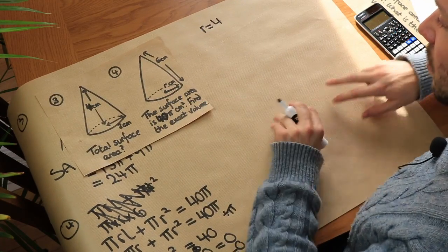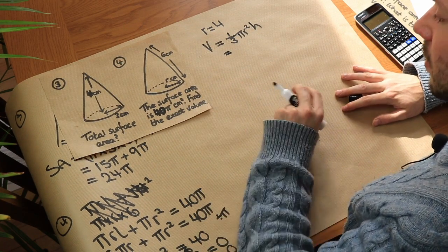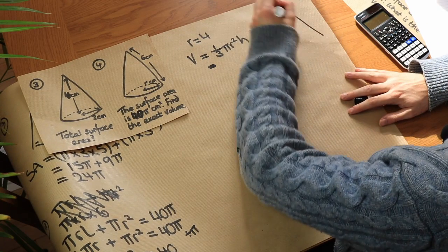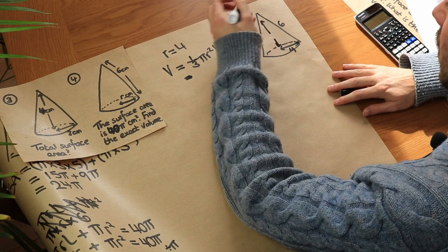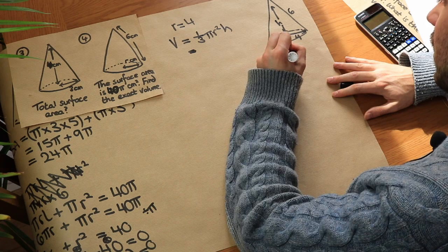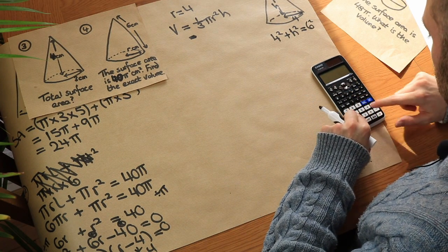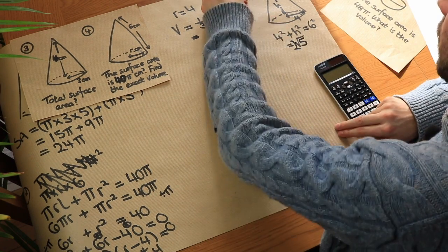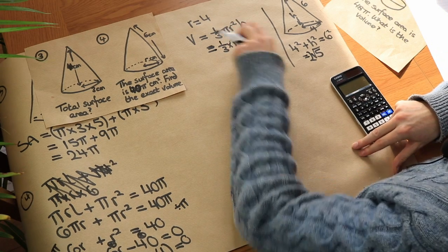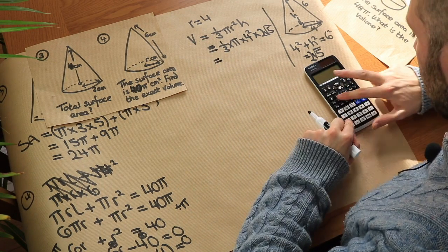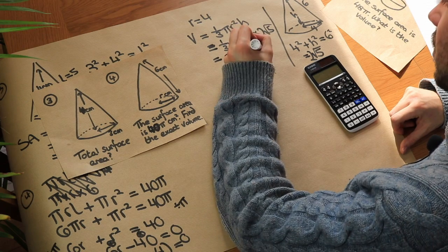Now that we know r equals 4, we want the volume. The volume of a cone is one-third pi r squared h. We don't know h, so we use Pythagoras again: 4 squared plus h squared equals 6 squared, giving h equals the square root of 36 minus 16, which is 2 root 5. Plugging in: volume equals one-third times pi times 4 squared times 2 root 5. Putting that into the calculator gives 74.9 centimetres cubed.